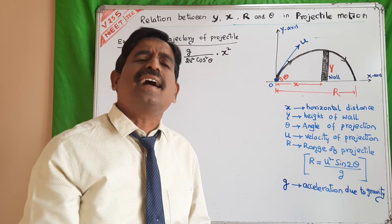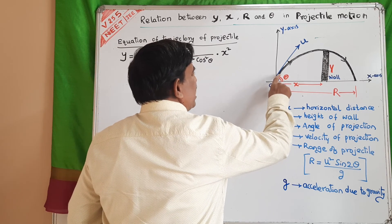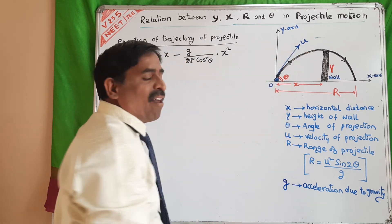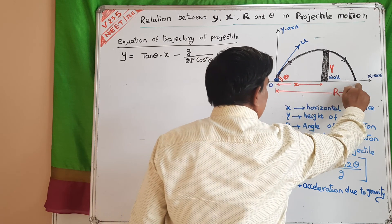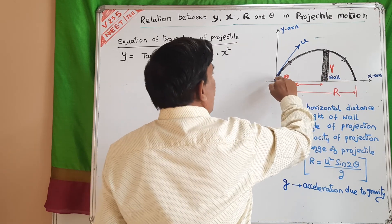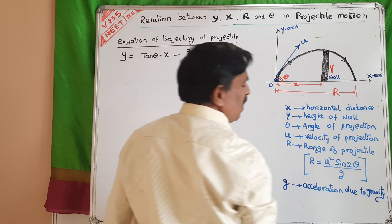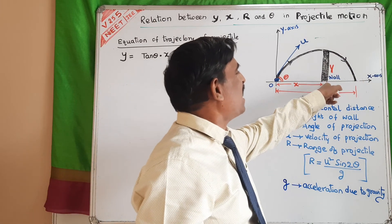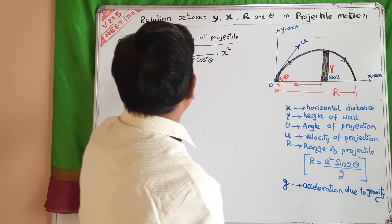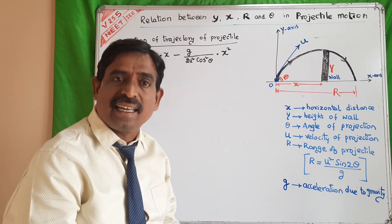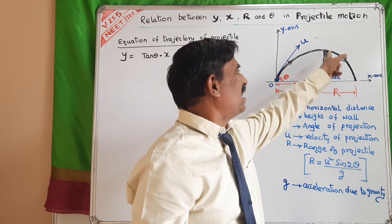Let us consider one cricket ball. You are hitting the cricket ball, and the ball is moving into air with some initial velocity u, making an angle theta with the horizontal direction. The ball crosses the wall and strikes the ground beyond the wall. They are asking: what is the height of the wall? That is nothing but y. Otherwise, the equation of trajectory in terms of range, horizontal distance x, and vertical distance y.